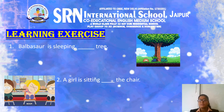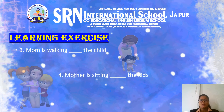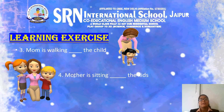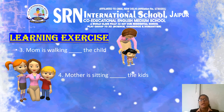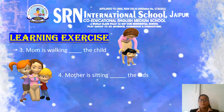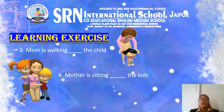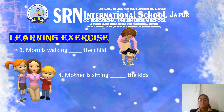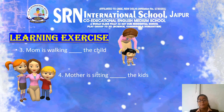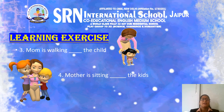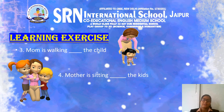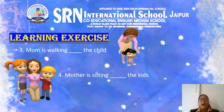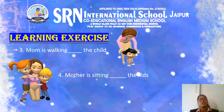Let's move to the next question. Mom is walking ___ the child. We have to see this picture. We can see that the child is in front, so the mother will be behind. We can say: mom is walking behind the child, and 'behind' will be our preposition.